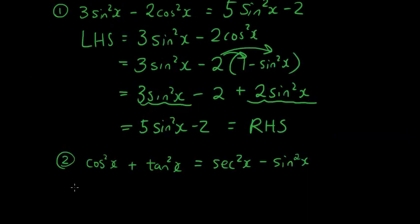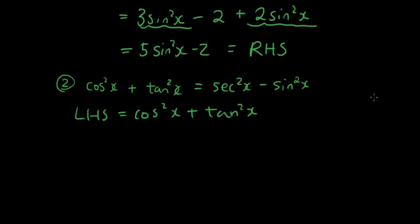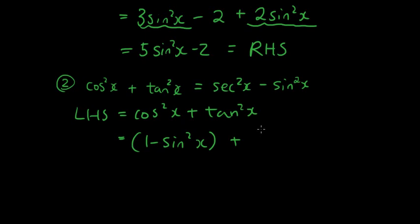The left hand side is equal to cos squared x plus tan squared x. cos squared x can be rearranged as 1 minus sin squared x, and tan squared x can be rearranged as sec squared x minus 1.